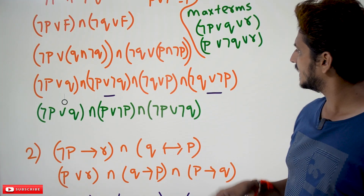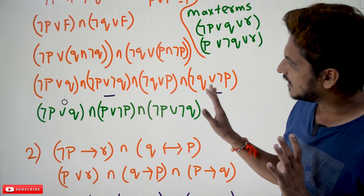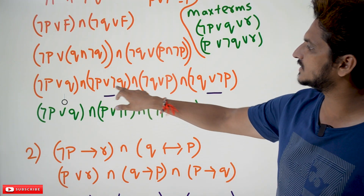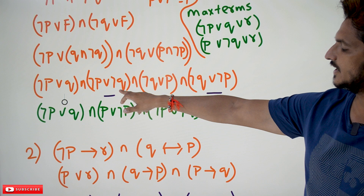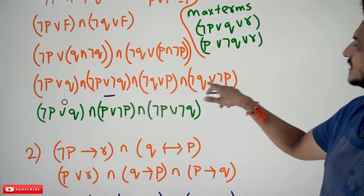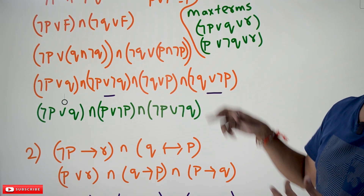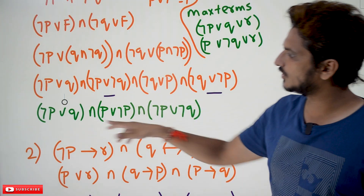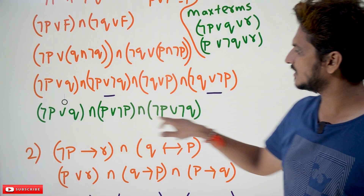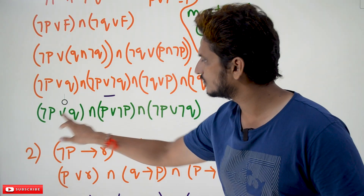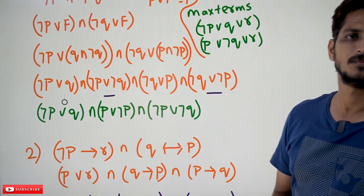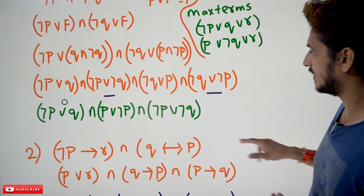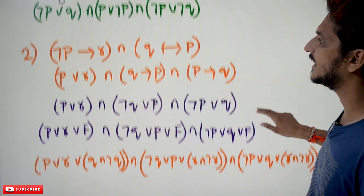But one more point: there are duplicates — negation p conjunction negation q and negation p disjunction negation q appear more than once. You can eliminate one and write it only once. So finally you are going to get three max terms — product of max terms. This is how we convert, and we are going to do one more example for better understanding.